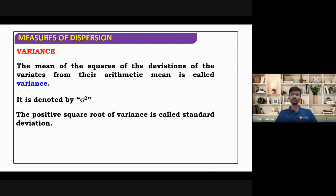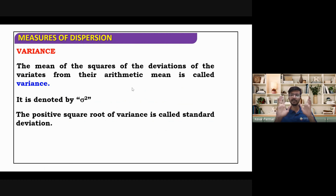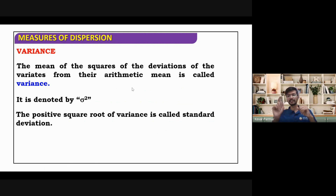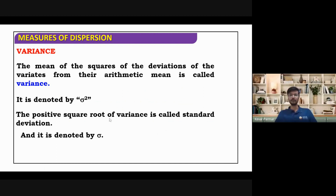The positive square root of variance is called standard deviation. As we all know, if we take a square root of a real number, we will get two values — plus and minus. So its positive value is the standard deviation. There is not much difference, just a square root difference. If variance is sigma squared, then standard deviation will be sigma.